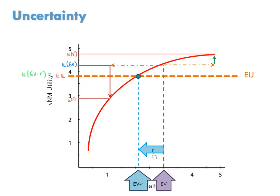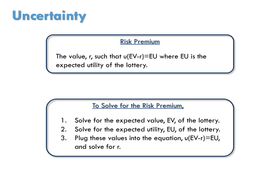We call this the risk premium. The risk premium says there's some certain amount of cash that would make the individual equivalent, or just as happy, as the lottery itself. So notice that the utility of EV minus R is set equal to the expected utility of the lottery. To solve for the risk premium: first, we need to calculate the expected value of a lottery; then we need to calculate the expected utility of the lottery; and finally, plug these two values into this equation to solve for R.